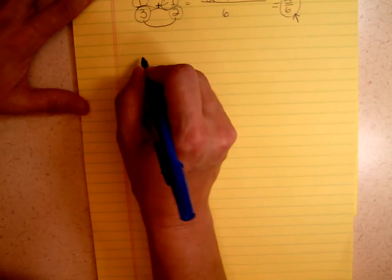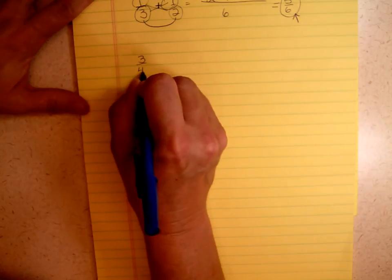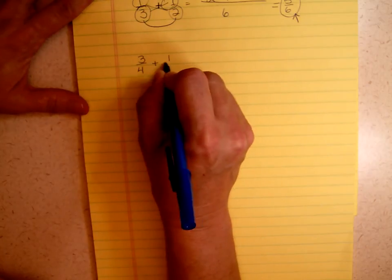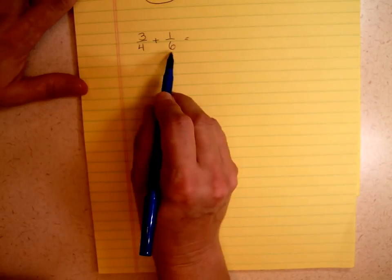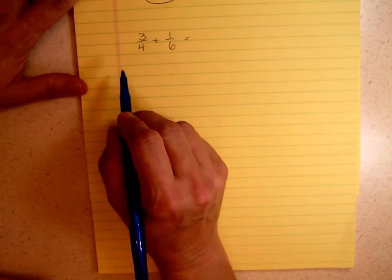So let's do another example. Let's say I have 3 fourths plus 1 sixth. Again, I'm going to look at that 4 and that 6 before I do anything.